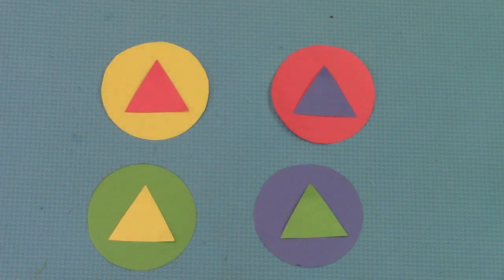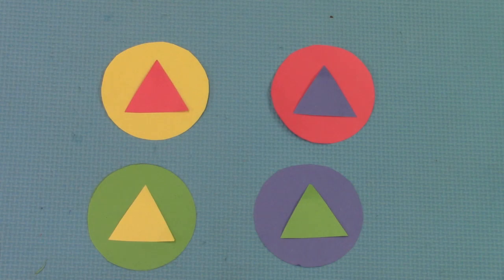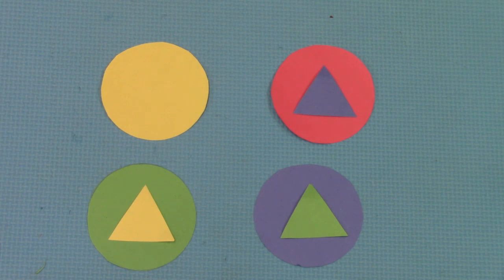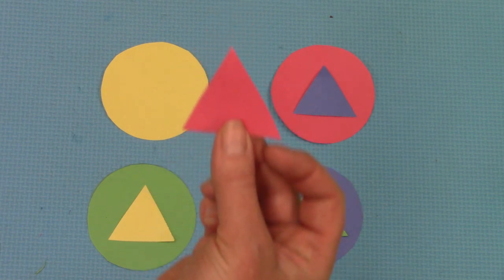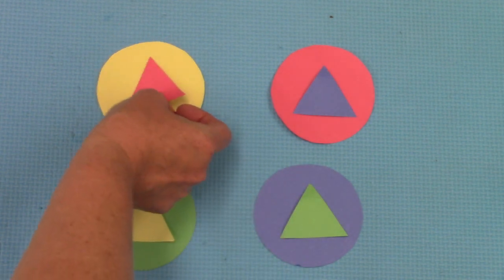All right. Let's take a look at these shapes. I have circles and triangles. All right. Close your eyes. Open your eyes. What shape did I take away? Describe it with three attributes. Did you say small red triangle? You would be right.